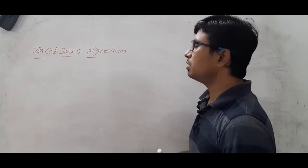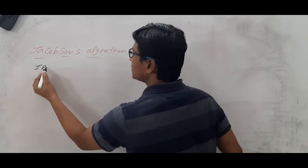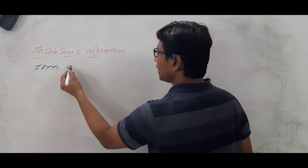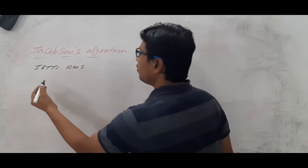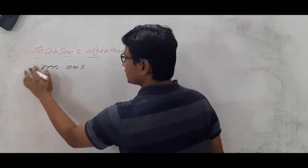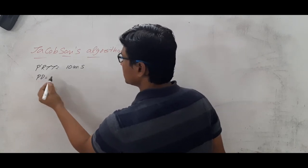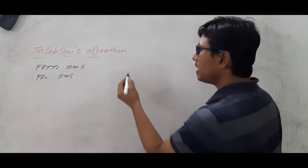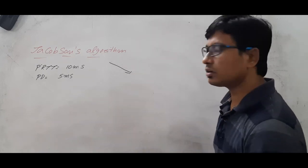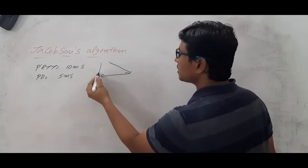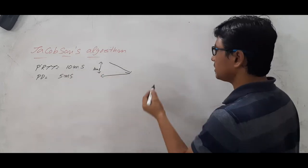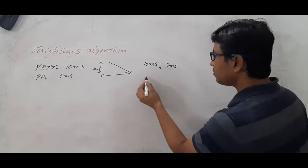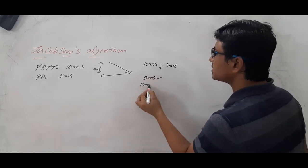In the Jacobson algorithm also, we will have the initial round trip time, which is a guess or a predicted round trip time. The predicted round trip time is 10 milliseconds, and the predicted deviation is 5 milliseconds. The meaning of deviation is that it may come in 10 plus or minus 5 milliseconds — meaning it may come in 5 milliseconds or 15 milliseconds. That is the meaning of deviation.